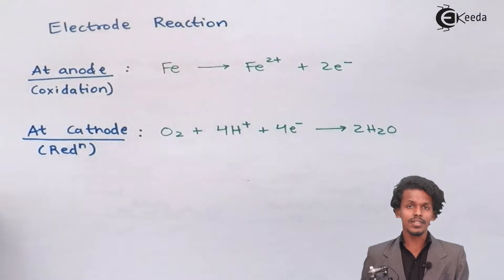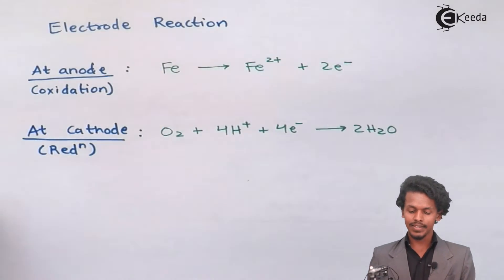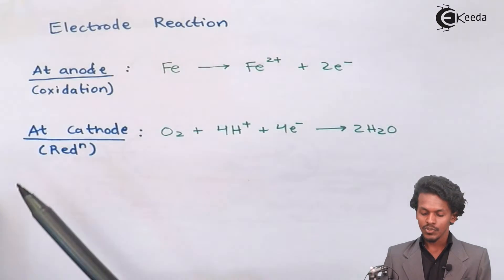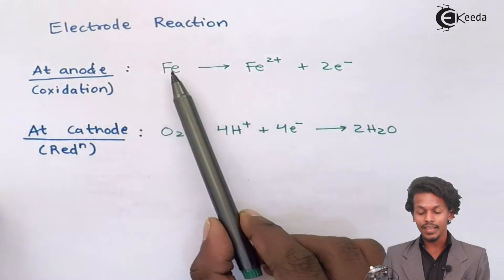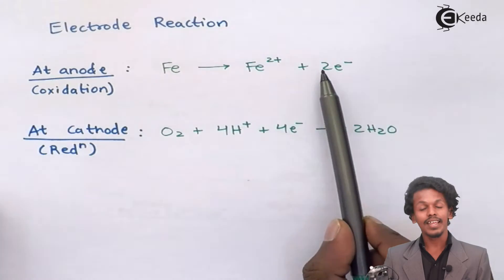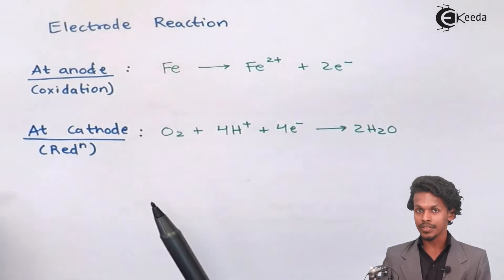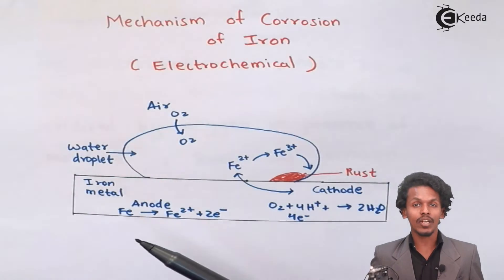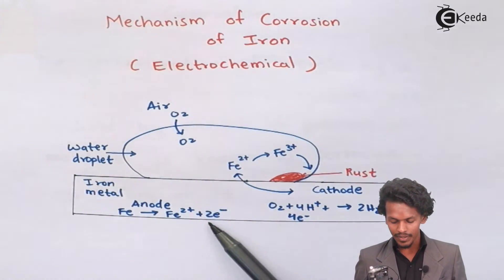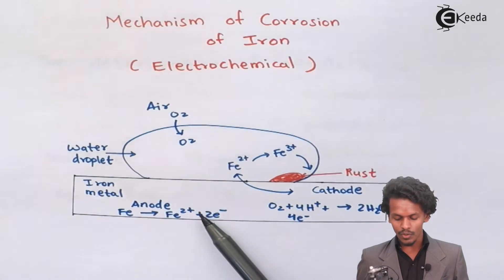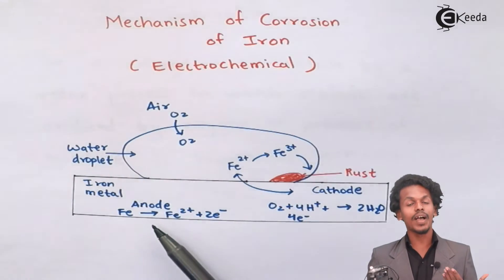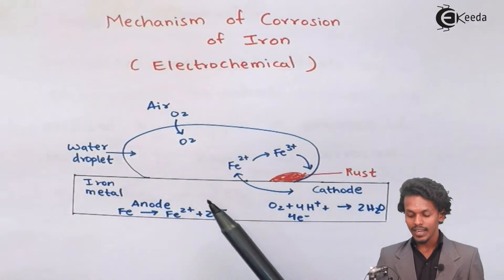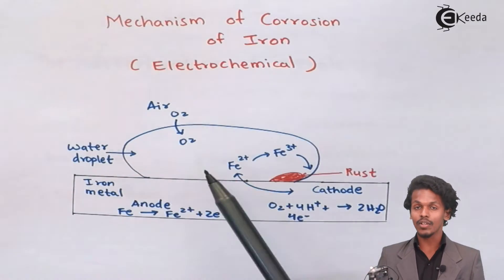The electrode reaction for corrosion of iron: at the anode, oxidation always occurs. Fe is converted into Fe²⁺ by liberating two electrons. The iron, which has a tendency to lose electrons, loses two electrons, resulting in the oxidation of iron to Fe²⁺. This Fe²⁺ will later be converted into Fe³⁺.